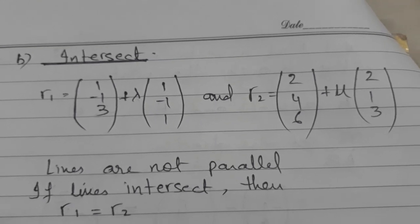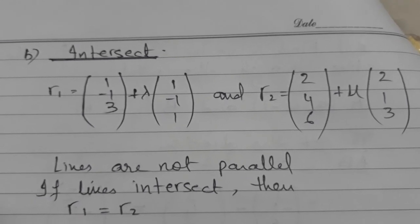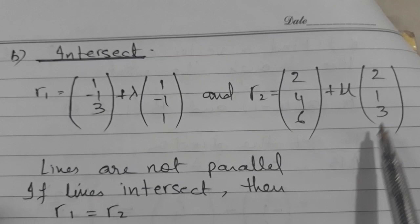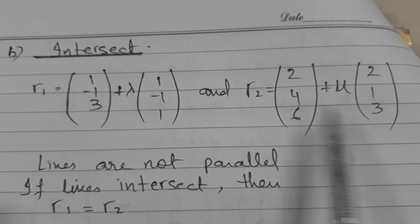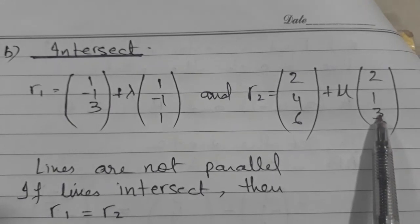Now we will look at the example when lines are intersecting. So here are two vector equation of the lines. And we can see from the directions that they are not multiple of each other. So they are not parallel lines.